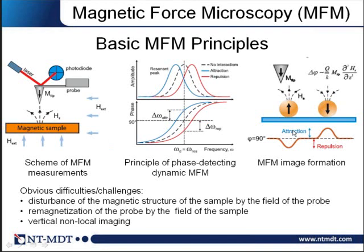By measuring such a phase shift, one can measure the magnetic forces acting on the cantilever from the sample. For attractive interaction the resonance frequency becomes lower, and for repulsive interaction it becomes higher. By measuring a positive or negative phase shift, one can easily distinguish between attractive and repulsive interaction. There are also challenges with this technique: since the magnetic probe itself has a magnetic moment and creates dipole fields, this probe can disturb the magnetic structure of the sample under investigation.